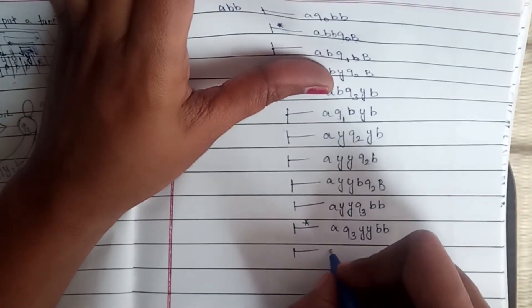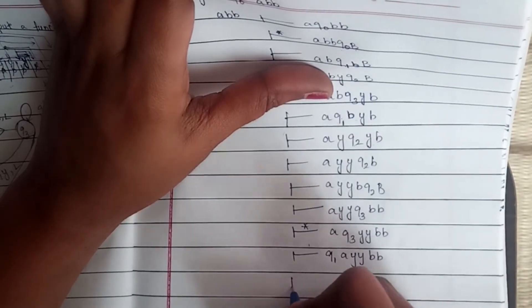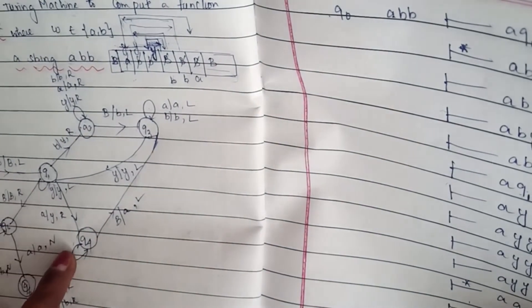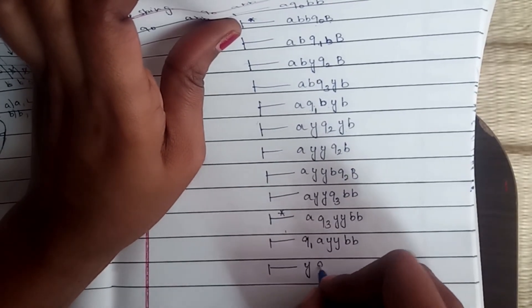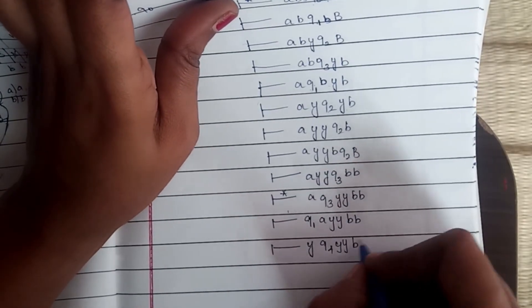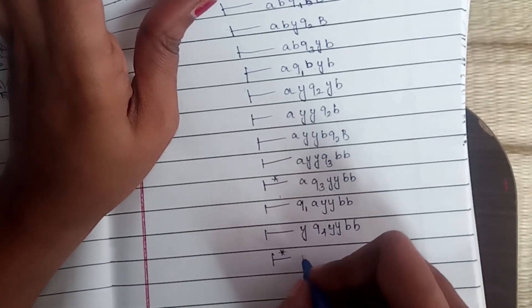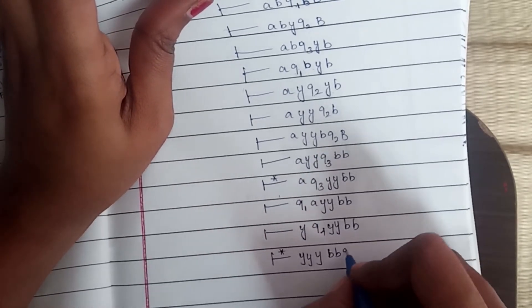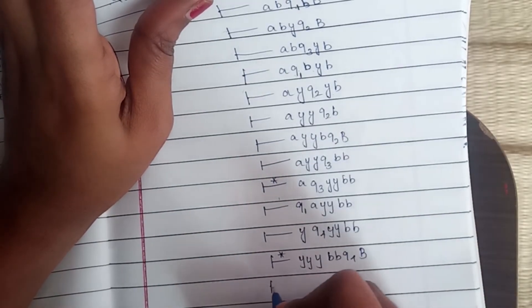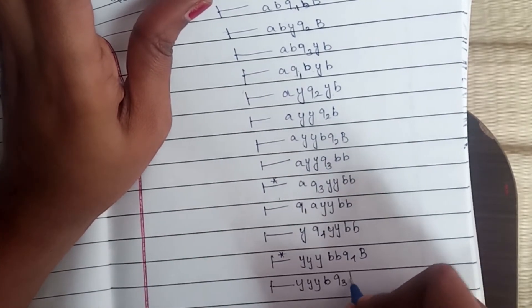Now we have q1 on 'a': 'a', 'y', 'y', 'b'. q1 on 'a' — 'a' is changed to 'y' moving right, entering q4. So 'y', q4, 'y', 'y', 'b'. After multiple moves, transitioning left with q4 and q1, we see blank space: 'y', 'y', 'y', 'b', q3, 'b'.